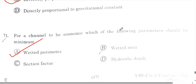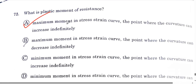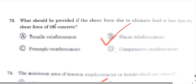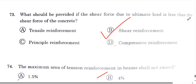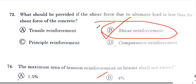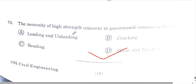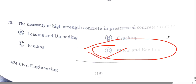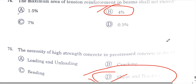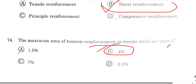Question number 71: for a channel section to be economical, the wetted perimeter should be minimum. Option A. Question number 72: the plastic moment of a section is the maximum moment where the curvature can increase indefinitely. Option A is correct. Question number 73: if the shear force due to ultimate load is less than the shear capacity of the concrete, shear reinforcement should be provided. Question number 74: the maximum area of steel is 4 percent or 0.04 times B times D. Question number 75: the necessity of high-strength concrete in prestressed concrete is due to the bond between steel and concrete. Option D, all of the above.